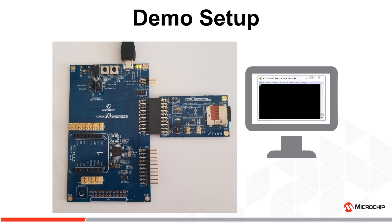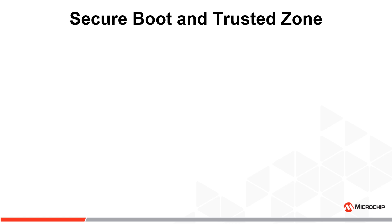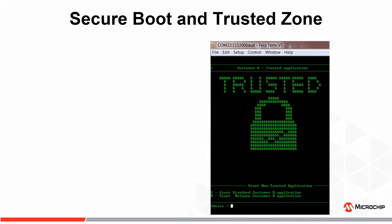You would also need a terminal emulator, such as Tera Term, installed on the computer. When the Xplained Pro kit is powered on, SAM L11 securely boots in the trusted zone and loads Customer A's IP. The demo provides two choices: Choice S, which is the first section of the demo to load Customer B's temperature sensor app, and Choice M, which is the second section to showcase SAM L11 counteracting malware and physical attacks.